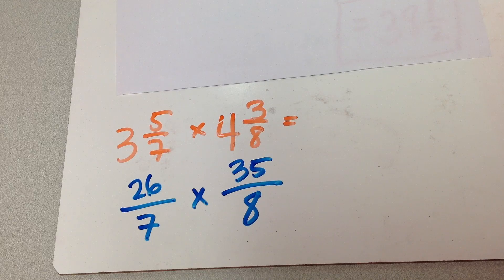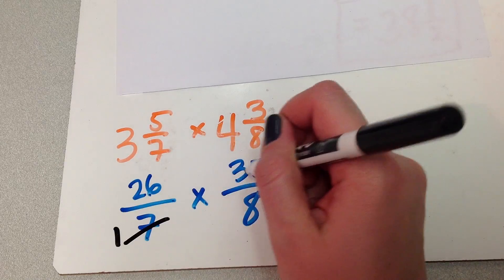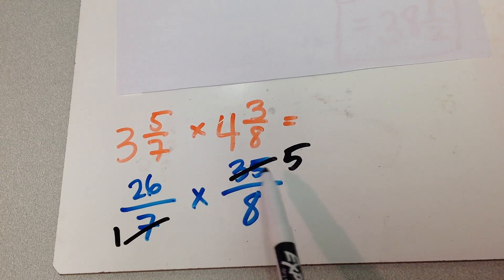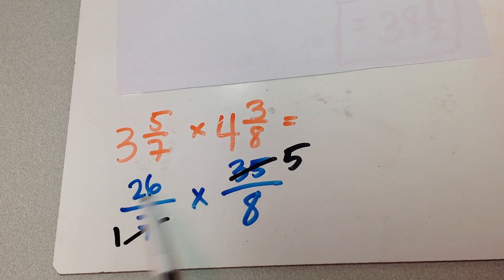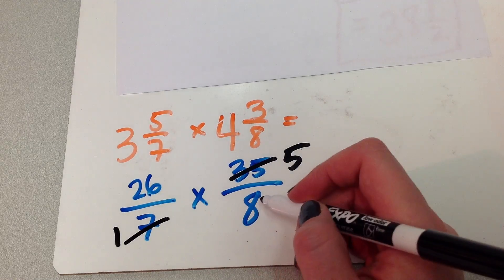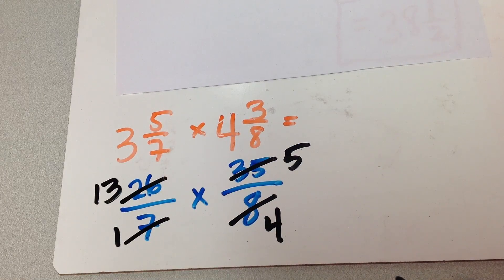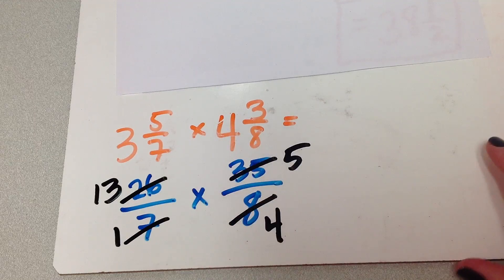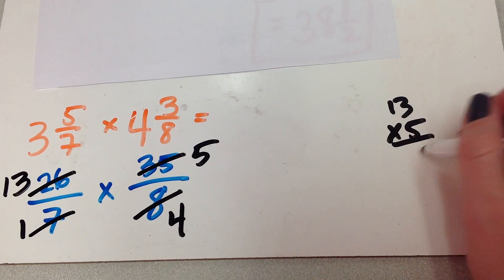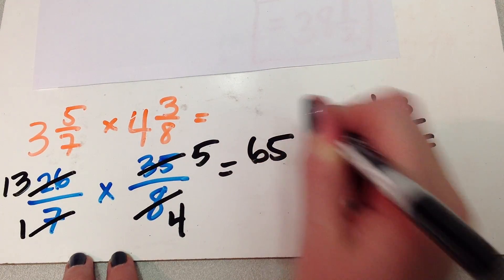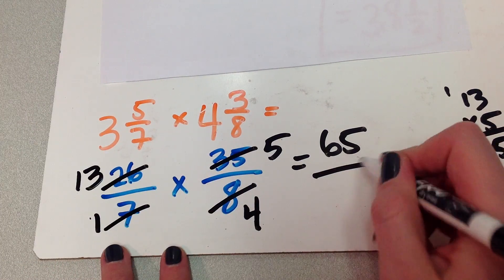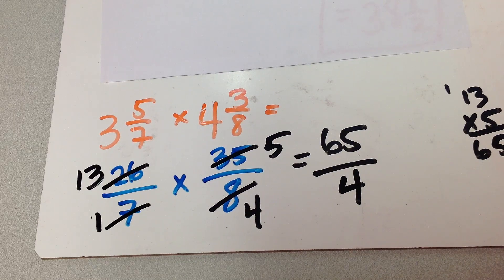Is there anything I can cross-cancel? Of course there is. 7 and 35 — I can divide 7 out of both of those. 7 divided by 7 is 1, 35 divided by 7 is 5. And in the other direction, these guys are both even, so I can divide both by 2. 8 divided by 2 is 4. 26 divided by 2 is 13. Now I have to multiply my new numbers straight across. 13 times 5 is 65 — that'll be my new top number. 1 times 4 is 4.